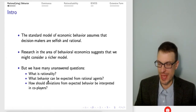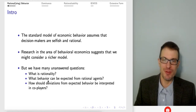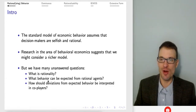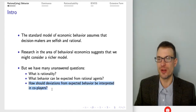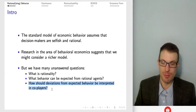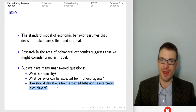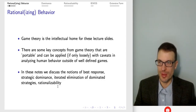Our standard economic model for behavior assumes decision makers are selfish and rational. Motivated by behavioral economics, we realized maybe we should consider a richer model, but we have lots of questions such as what do we mean by rationality, what behavior can we expect from rational agents, and how should deviations from expected behavior be interpreted in co-players.